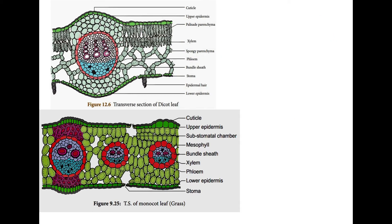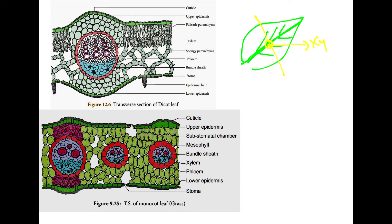Lastly, we have the vascular bundles. For example, this is your mid-rib, and you have your lateral veins. If you take a section from here, you have your xylem and your phloem. That region is shown here in the vascular bundle.